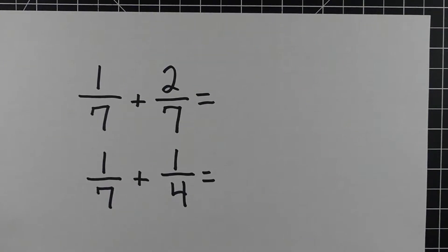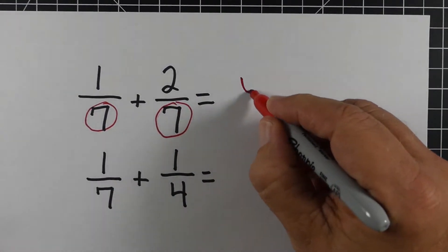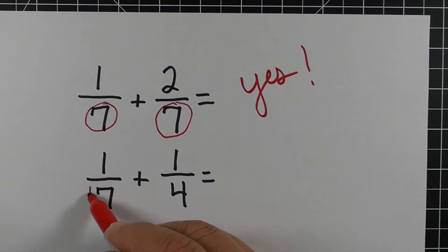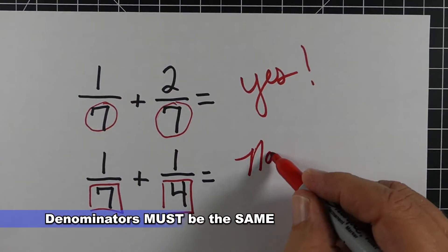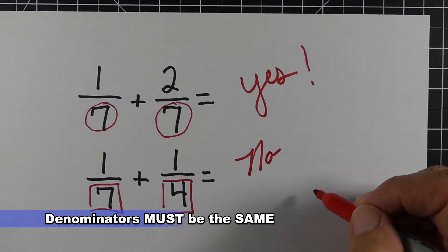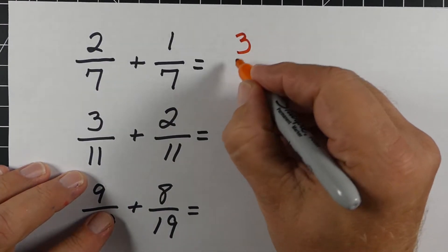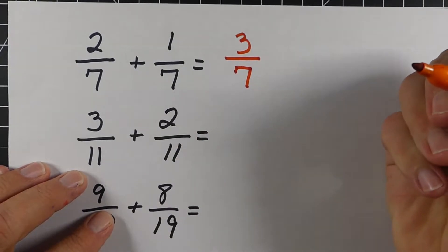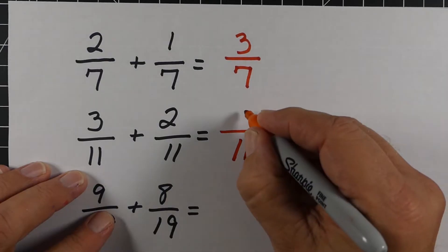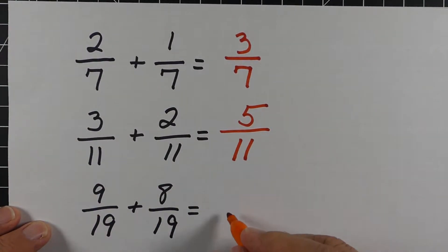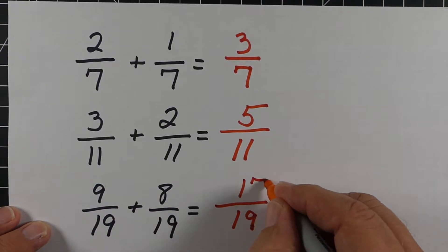The number one key thing when we're trying to add fractions is that our denominators have to be the same. If they are, we're good to go — like in this example. If the denominators are different, you have to change them. All these problems here have the same denominator, so it's very easy. We just add the numerators — the top number — and keep the denominator. So 3/11 and 2/11 is 5/11, and 9/19 plus 8/19 is 17/19.